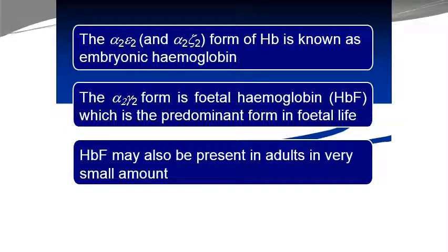The alpha-2 epsilon-2 form of hemoglobin is known as embryonic hemoglobin. The alpha-2 gamma-2 form is known as fetal hemoglobin, or HbF. In the fetus, HbF is the major type, but in some adults a very small amount of fetal hemoglobin can also be found.